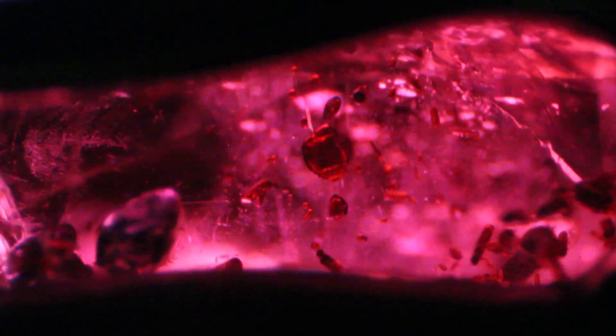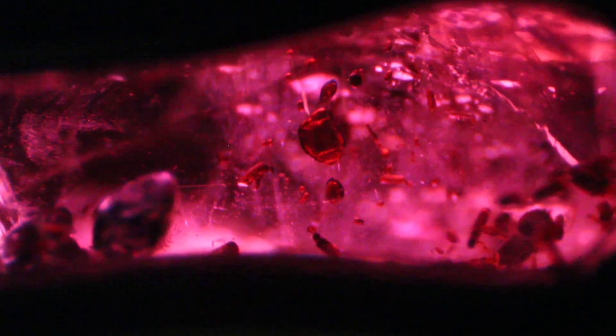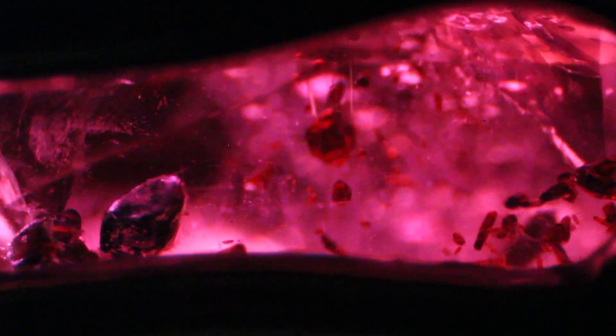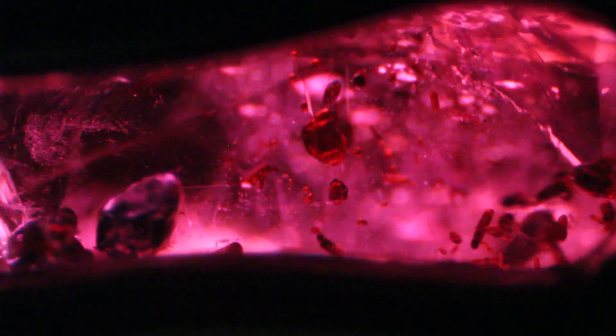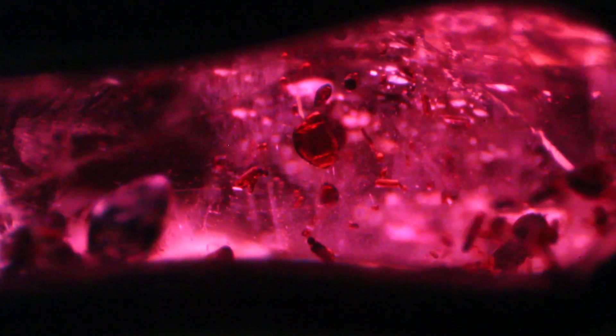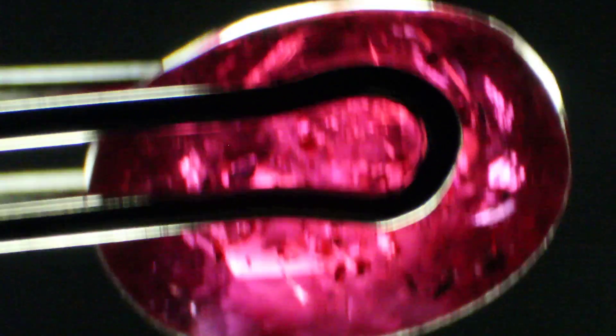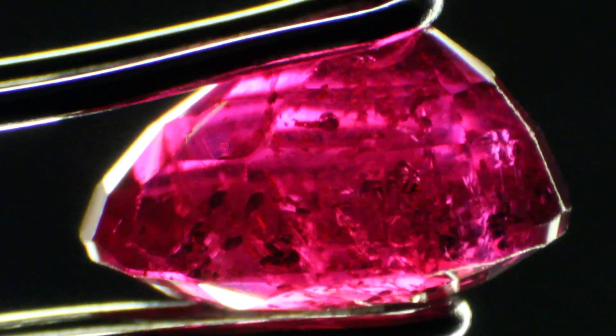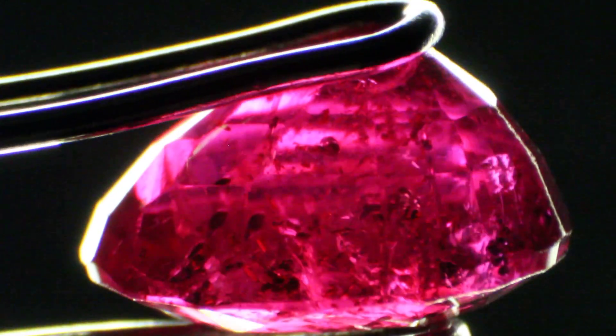Now we know this isn't heated because of a few things. If we go back to these inclusions here, a little bit easier to see. Rutile, whichever way you want to say it, these here, you'll notice that there's no discoid fractures. They're untouched. There's nothing showing us that there is high-temperature heat treatment involved because corundum has a high-temperature heat treatment. And with that, back to 10 power here.